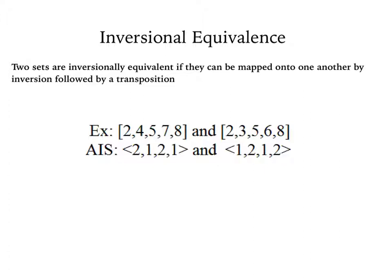Here's an example. The AIS of the first set is inverted, or reversed, in the second set. Therefore, inversionally equivalent sets will have adjacency interval series that are mutually retrogradable in some ordering of the set, which is not always the normal order.